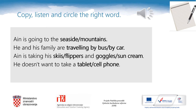And now please open your notebooks and copy this text. Ion is going to the seaside or mountains. He and his family are traveling by bus or by car. Ion is taking his flippers or goggles or sun cream. He doesn't want to take a tablet or cell phone. After you copy the text, come back to the video and listen to Ion to circle the word you hear. Are you ready? Let's start.